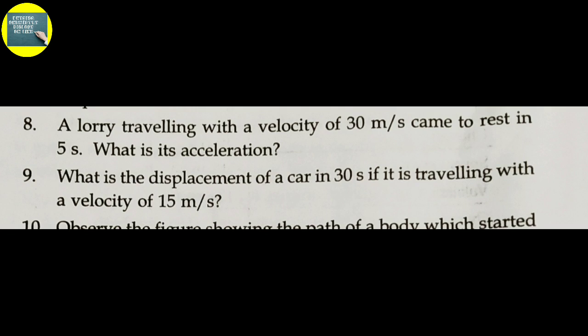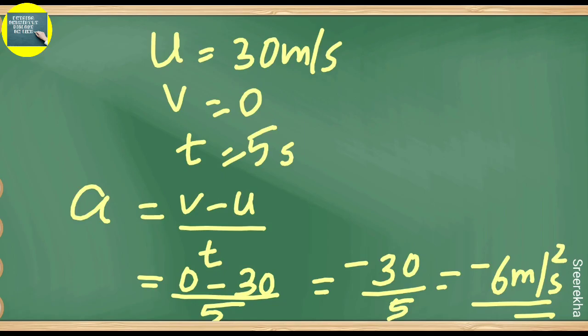Eighth question: A lorry travelling with a velocity of 30 meters per second came to rest in 5 seconds. What is its acceleration? Initial velocity u equals 30 m/s, final velocity v equals 0, time t equals 5 seconds. Acceleration a equals v minus u divided by t: 0 minus 30 divided by 5 equals minus 6 meters per second squared.